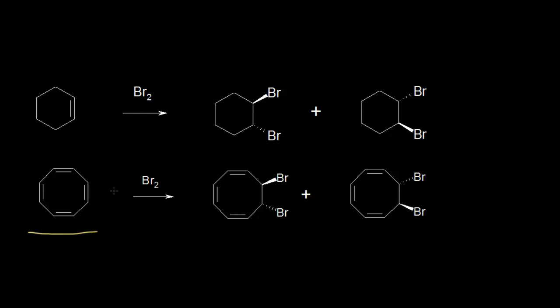It turns out cyclooctatetraene does not react like benzene. Benzene did not react the way cyclohexene did — cyclohexene will give us a mix of enantiomers when bromine adds across the double bond, but benzene does not do that. Cyclooctatetraene does, as a matter of fact — it will give you a mixture of enantiomers, and the bromine will add across one of those double bonds.